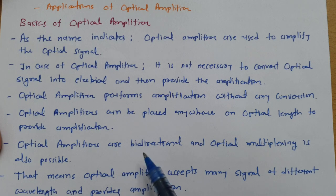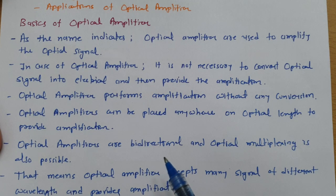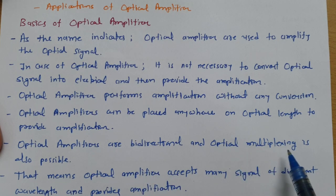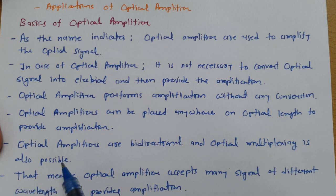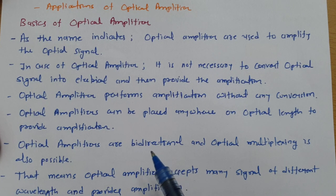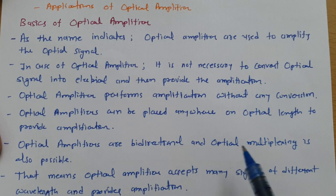Optical Amplifiers are bi-directional — they do not work in one direction only. In both directions, they perform amplification. Optical Multiplexing is also possible by using an Optical Amplifier, meaning it accepts many signals of different wavelengths and provides amplification for all of them.